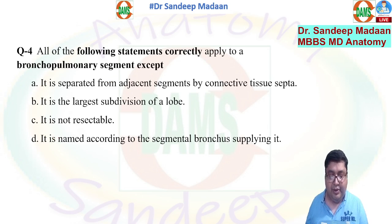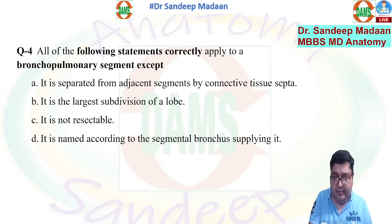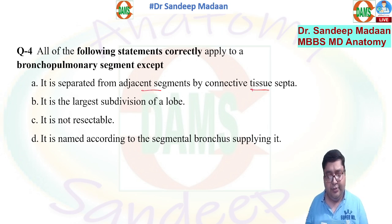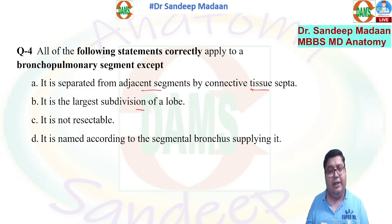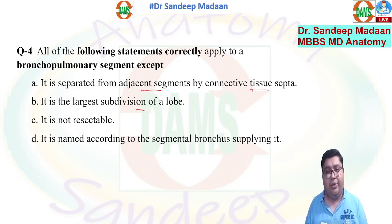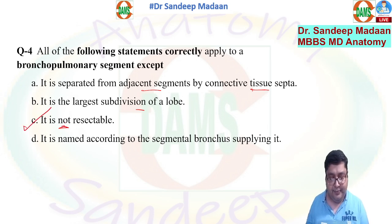Question number four: all of the following statements correctly apply to a bronchopulmonary segment except. It is separated from the adjacent segment by connective tissue septa — that is a true statement. It is the largest subdivision — that is very much true. It is resectable — so the word 'not' here is wrong, making this the exception. The name according to the segmental bronchus is also a true statement.